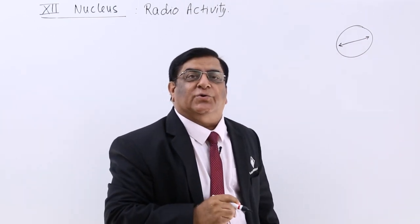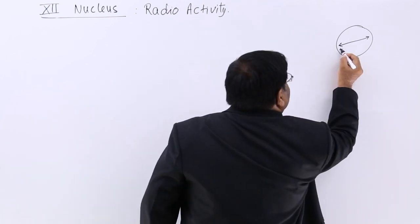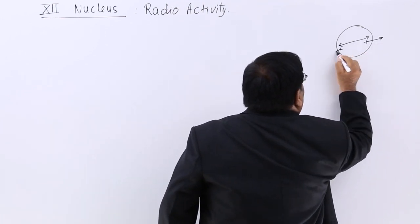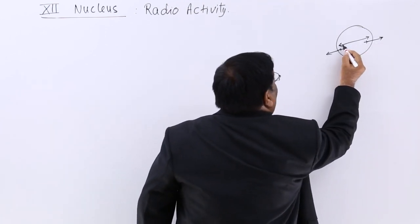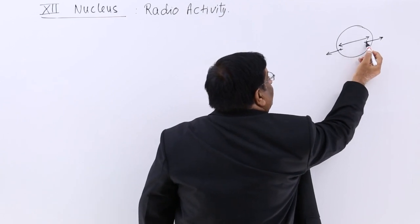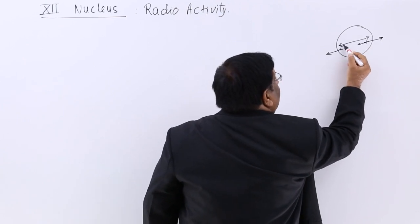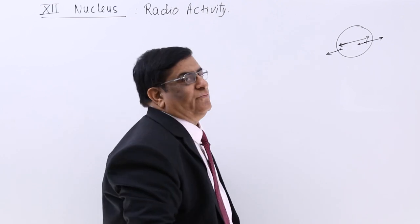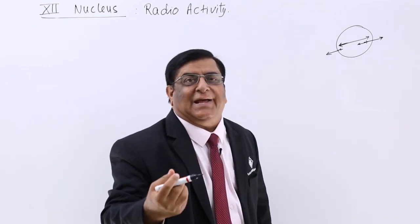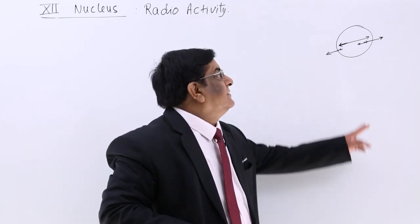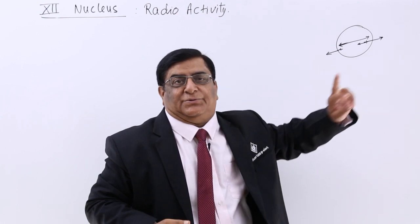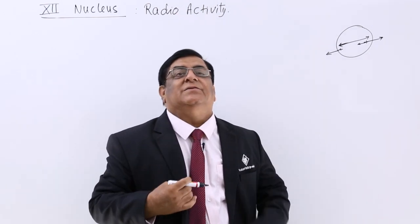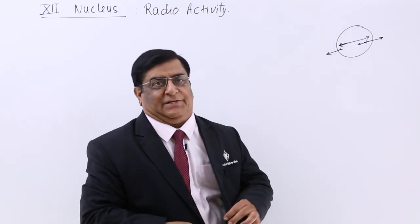The Coulomb force causes like charges (plus-plus) to repel, while the nuclear force causes attraction. But because of the large distance, the nuclear force becomes weaker. So there is a repulsion and some particles are ejected out. This activity is known as radioactivity.